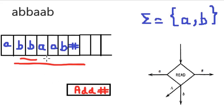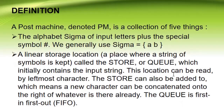Unlike a Turing Machine or Pushdown Automata, we assume that the string is already placed in the queue at the start — it has to be read from there. This location can be read by accessing the leftmost character. The store can also be added to, meaning a new character can be concatenated onto the right of whatever is already there. The queue is first-in, first-out.